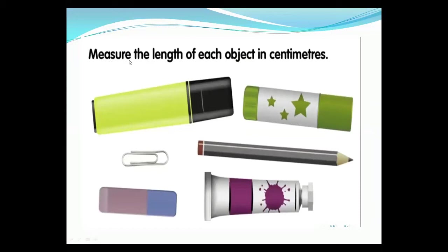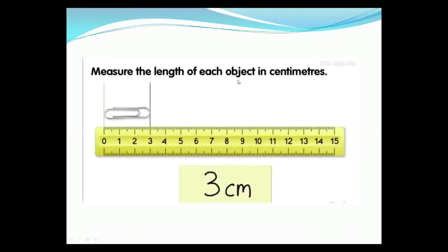Now we will learn how to measure the length of objects in centimeters. We use the centimeter unit to measure smaller objects like pencil, paper pen, and eraser. Now, measure the length of each object in centimeters. This is the paper pen — what is its length? The length of this paper pen is equal to three centimeters. So we write here: three centimeters.